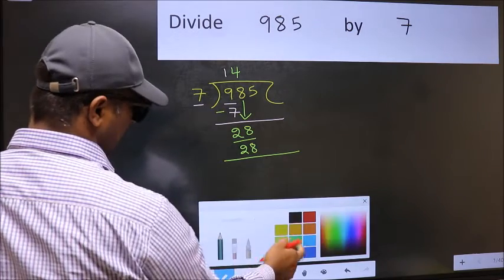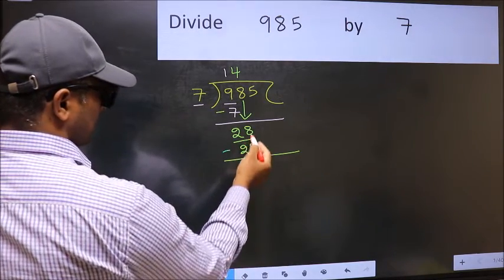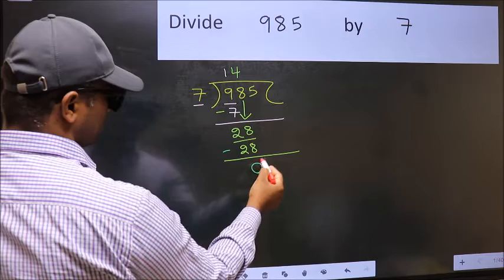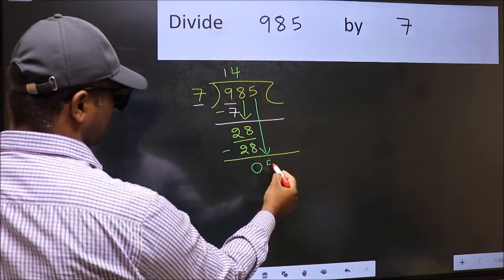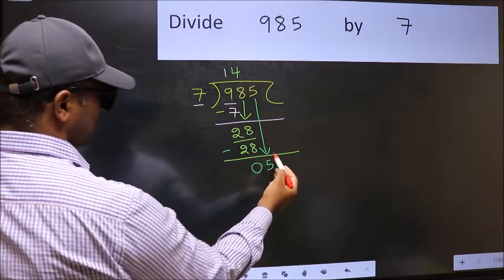Now you should subtract: 28 minus 28 is 0. After this, bring down the number beside it, so 5 down.